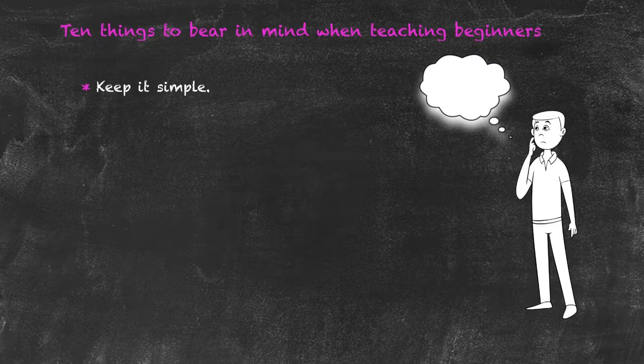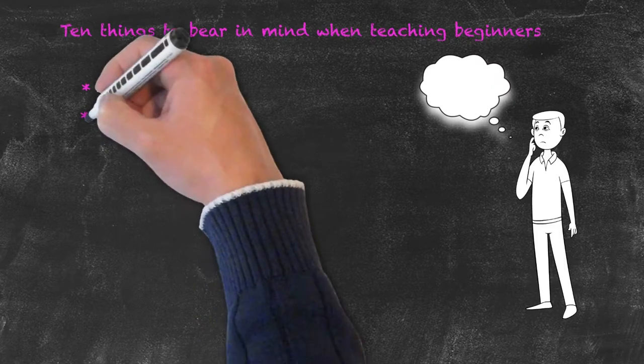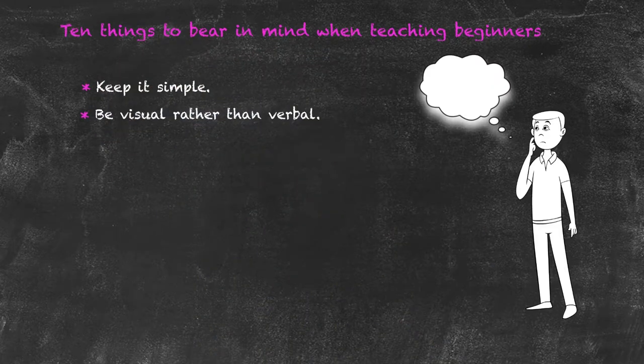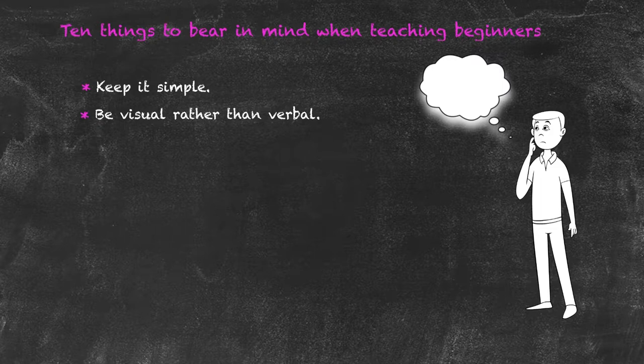One of the ways in which we can reduce that language level down to its lowest possible value is to be visual rather than verbal. Certainly at the starter level, and within all levels in fact, visual information is a far easier way to transmit that information than trying to talk about it.